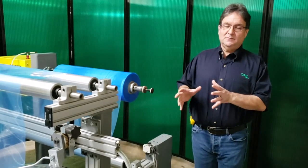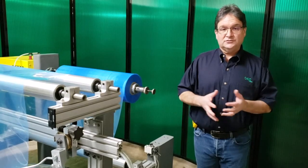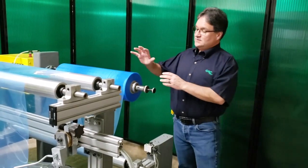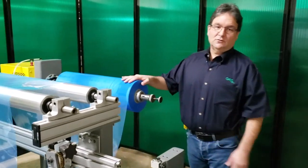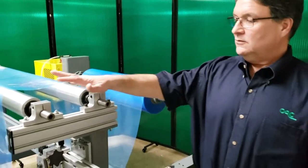What we have here is a simple unwind rewind stand that we built for testing our equipment and also for doing videos like this. What we have on the unwind is a roll of tensioned roll of polyethylene film. It's 3 mil. We go around a couple of other rolls.